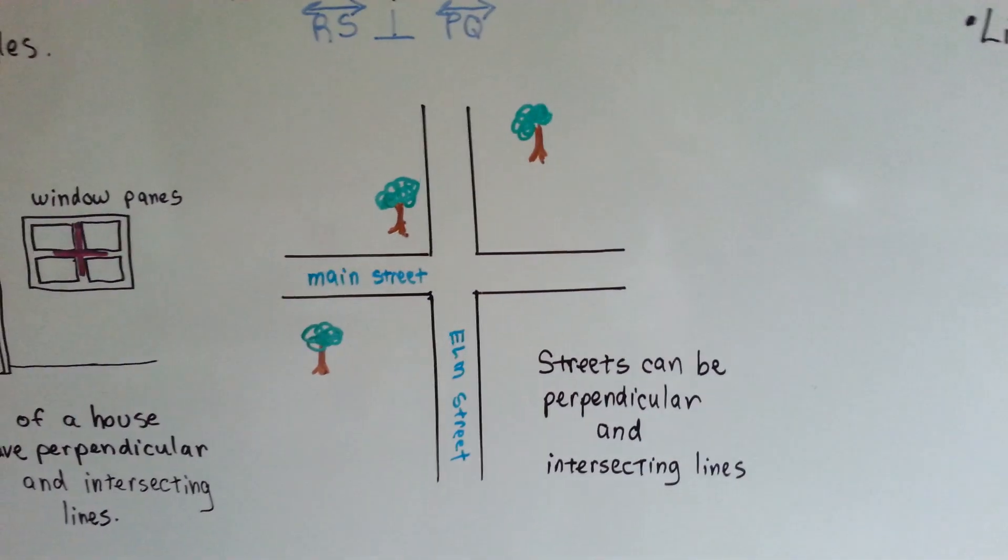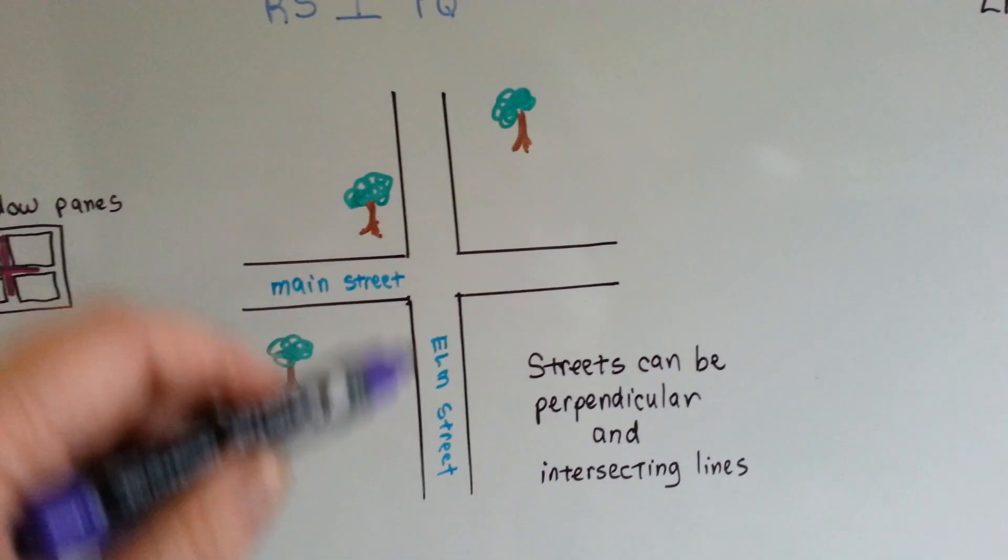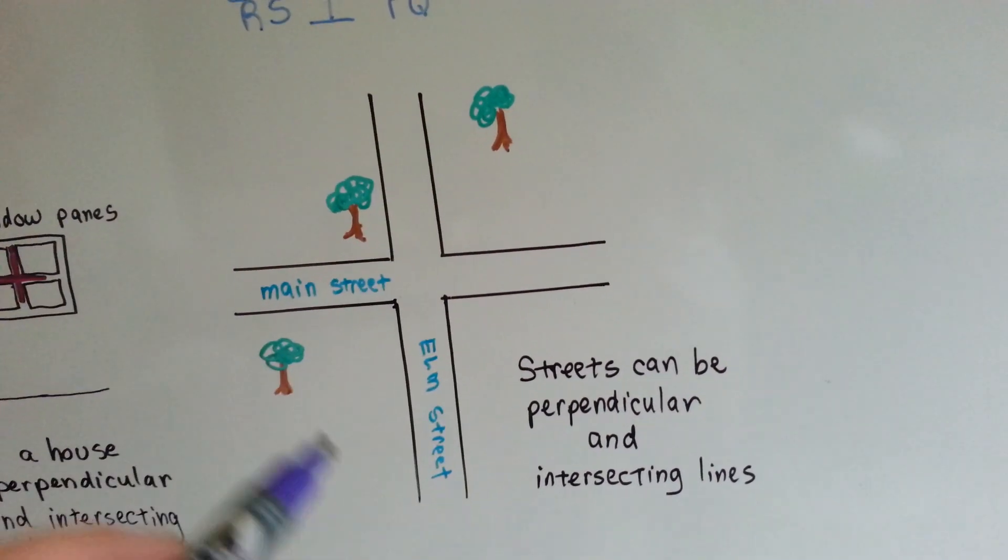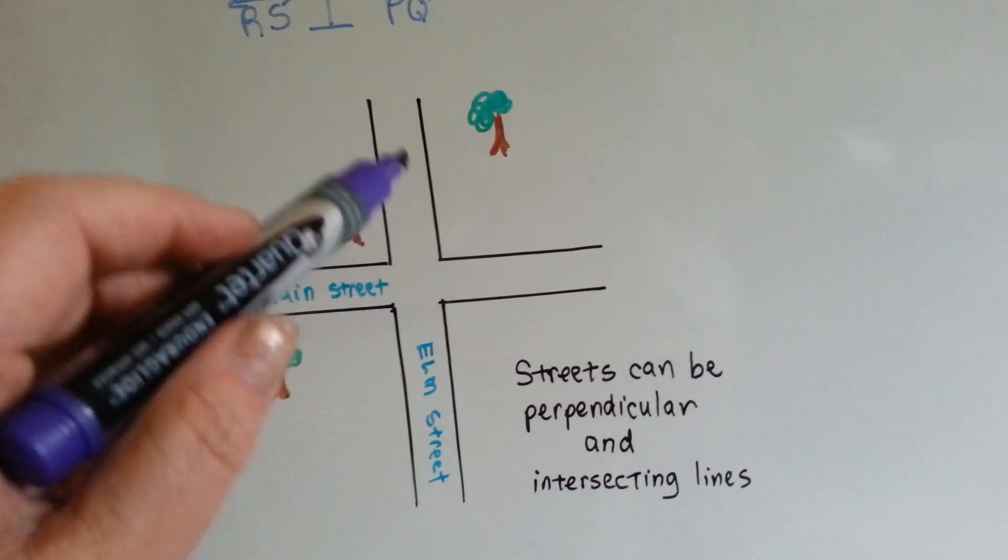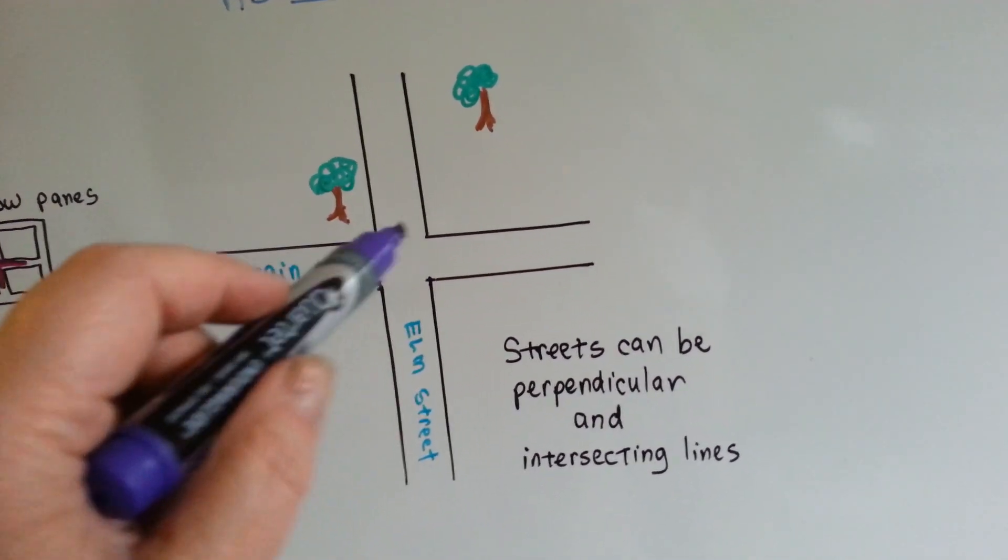Streets can be perpendicular and intersecting. Here Main Street intersects Elm Street, and they are perpendicular. And you know what? Do you know where Main Street and Elm Street meet? At the intersection. That's why it's called an intersection.